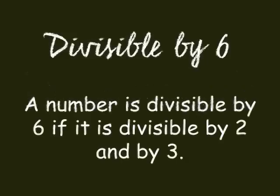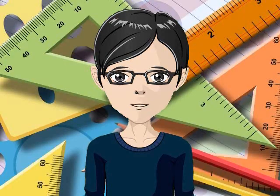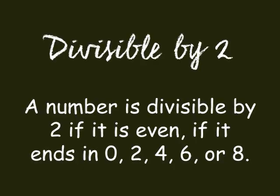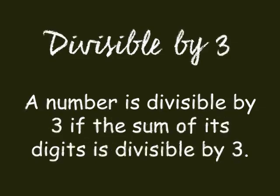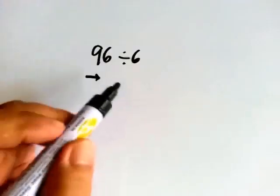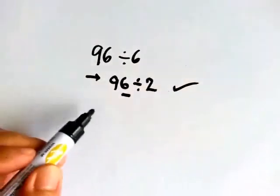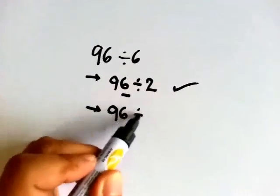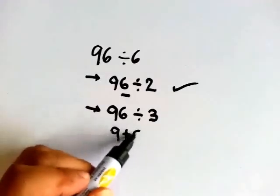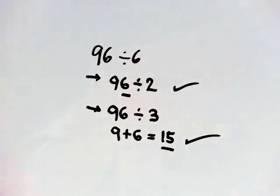To check if a number is divisible by 6, you check if the number is divisible by both 2 and 3. To check if a number is divisible by 2, just check if the number is an even number. To check if a number is divisible by 3, you add the digits — if the sum of the digits is divisible by 3, then the number is divisible by 3. Is 96 divisible by 6? Is 96 an even number? Yes, so it is divisible by 2. Then we check if it is divisible by 3: 9 plus 6 equals 15. 15 is in the multiplication table of 3. So 96 is divisible by 3, and since it is divisible by both 2 and 3, it is divisible by 6.